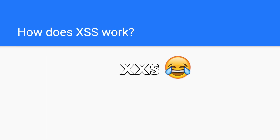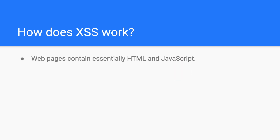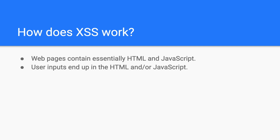Let's start by explaining how XSS works. Web applications typically serve HTML to the web browser, which typically contains JavaScript to instruct them how to perform many operations, like creating an interactive user experience, making API calls, etc. Web applications also process user inputs and show the results in the rendered HTML. For example, when you write a comment, the application stores it and shows it in the comments section.